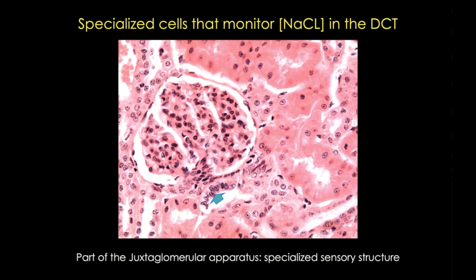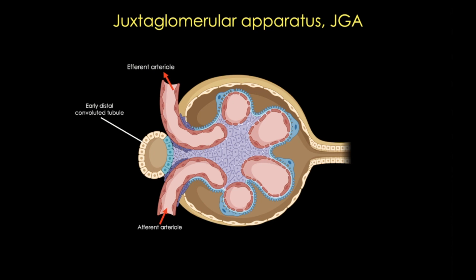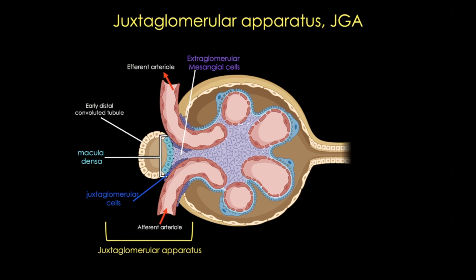When the distal tubule contacts the arterioles at the vascular pole of the renal corpuscle, the cells become more columnar and closely packed, forming the macula densa — literally the 'thicker spot.' The macula densa is part of the juxtaglomerular apparatus, a sensory structure that uses feedback mechanisms to regulate glomerular blood flow, keeping it relatively constant. The aqua-colored cells represent the macula densa, the purple cells are extraglomerular mesangial cells, and the darker blue cells are the juxtaglomerular cells — modified smooth muscle cells that secrete the protease renin. Together, these structures comprise the juxtaglomerular apparatus.